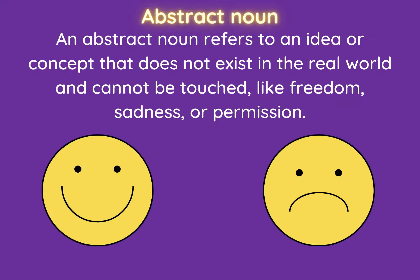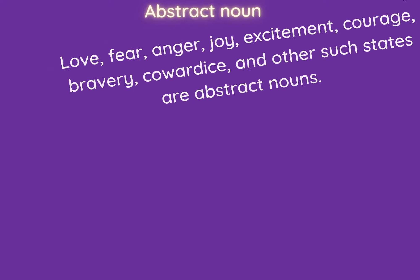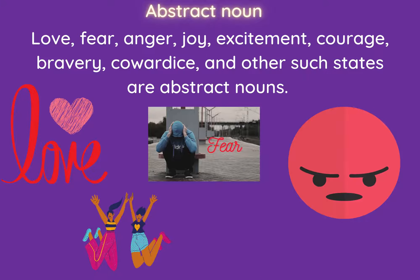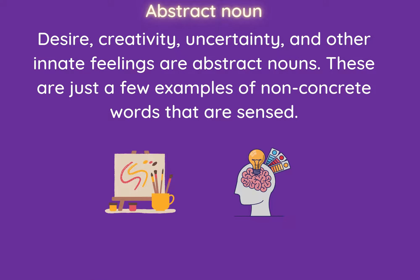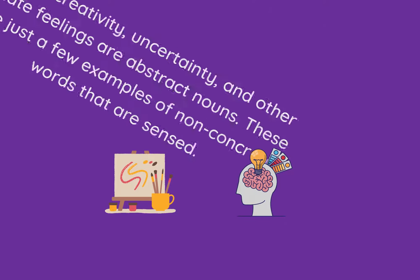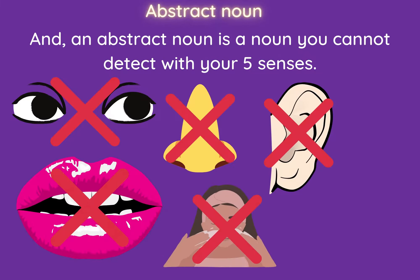Abstract noun. An abstract noun refers to an idea or concept that does not exist in the real world and cannot be touched — like freedom, sadness, or permission. Some states that come under abstract nouns are love, fear, anger, joy, excitement, courage, bravery, desire, creativity, and uncertainty. In simpler terms, an abstract noun is a noun which you cannot detect with your five senses.